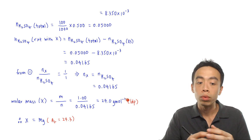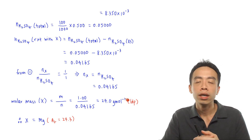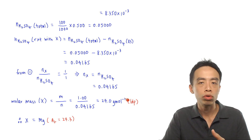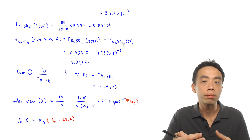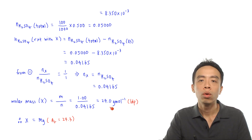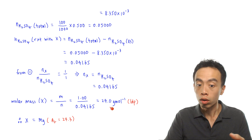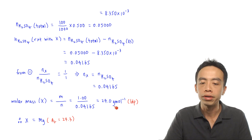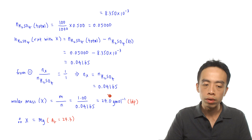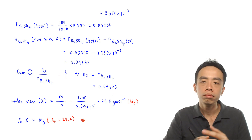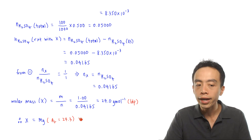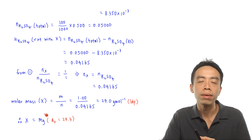We can now compare this value in the periodic table. Since X forms a 2+ charge, we know it is in Group 2. Looking for a Group 2 metal whose atomic mass is closest to 24.0, we find magnesium, which has an atomic mass of 24.3. Therefore, X is magnesium.